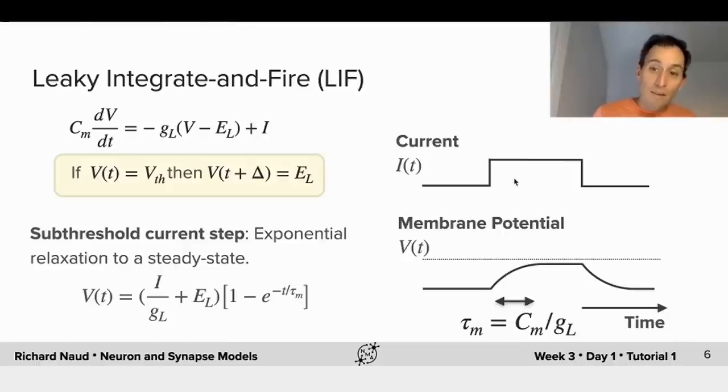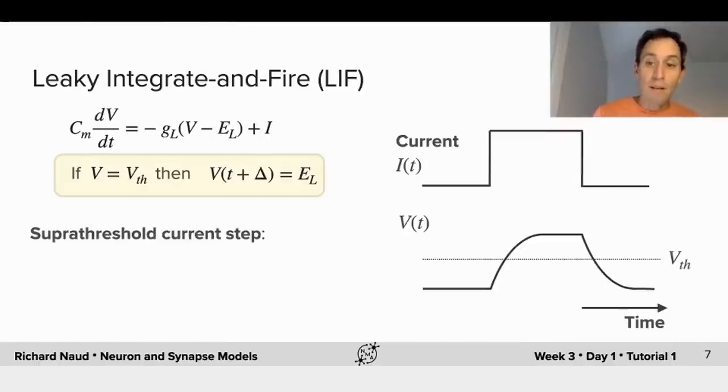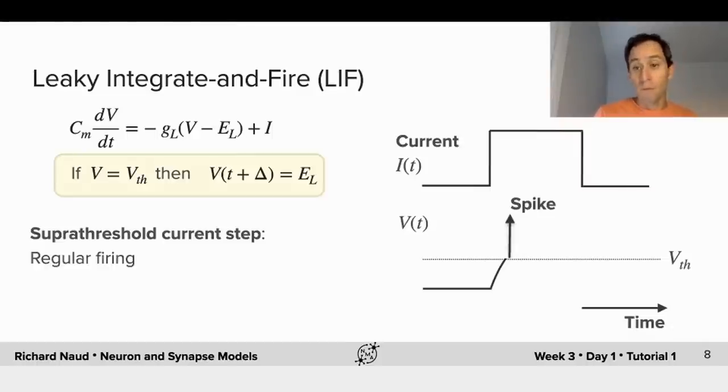Now, let us increase the step such that the membrane potential is indeed reaching the threshold. In that case, we will follow the reset condition and the threshold condition such that we stop the dynamics. Well, we say we're making a spike.